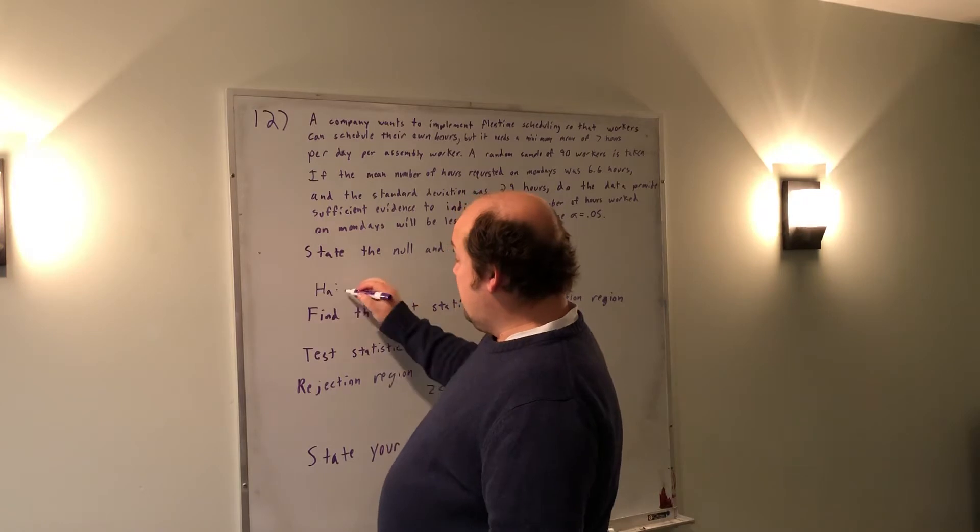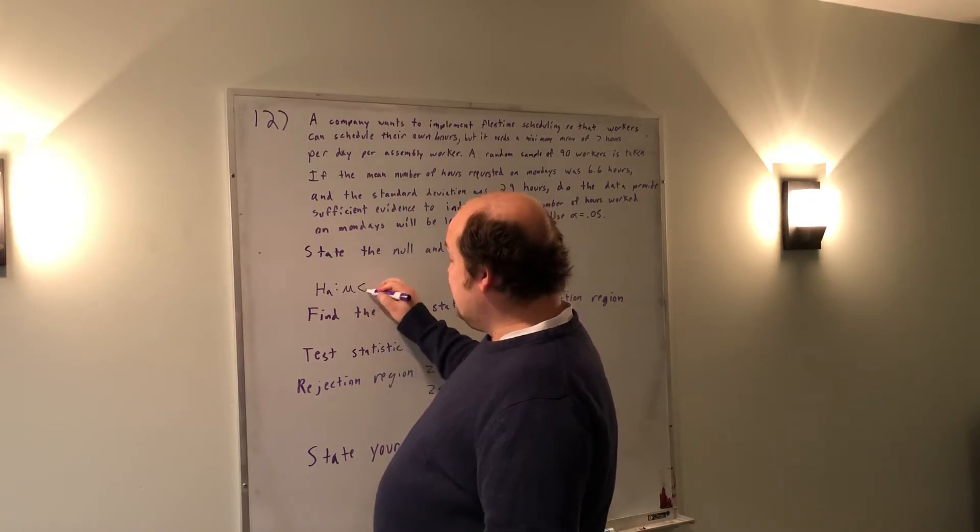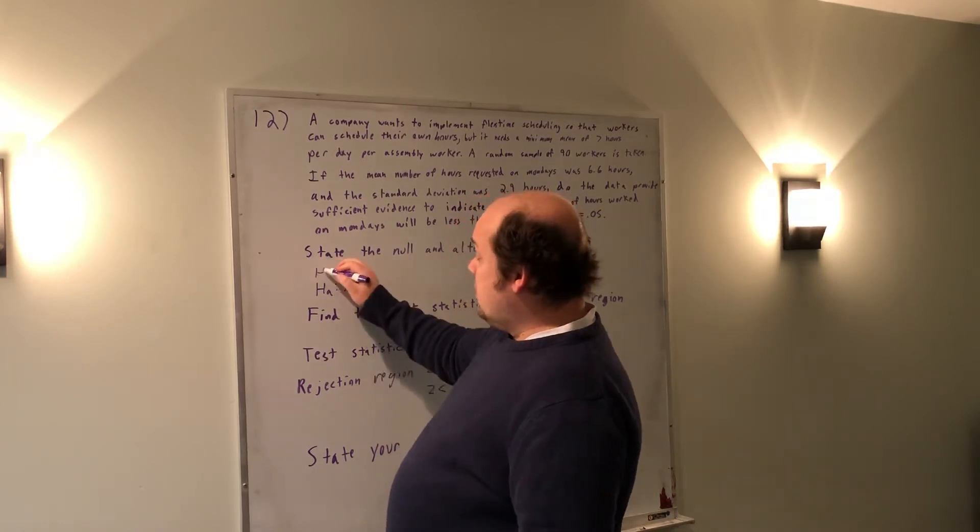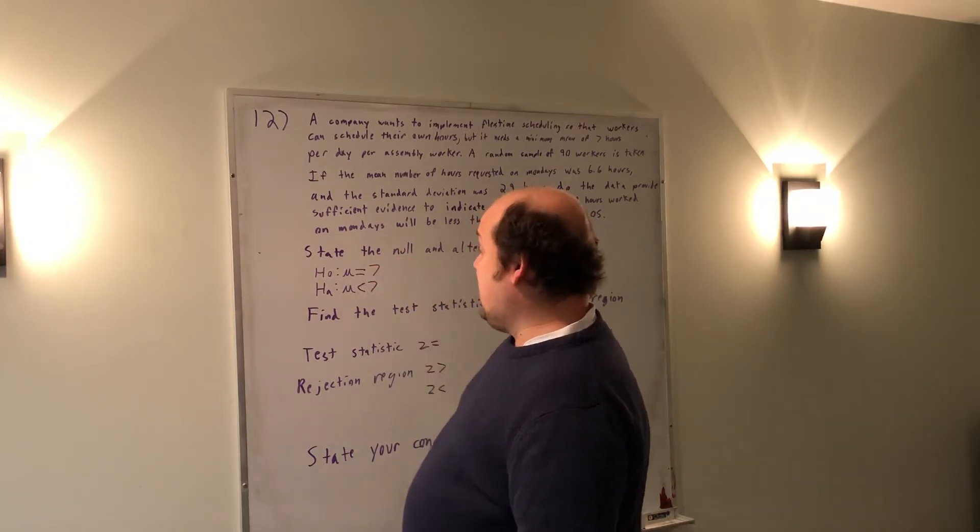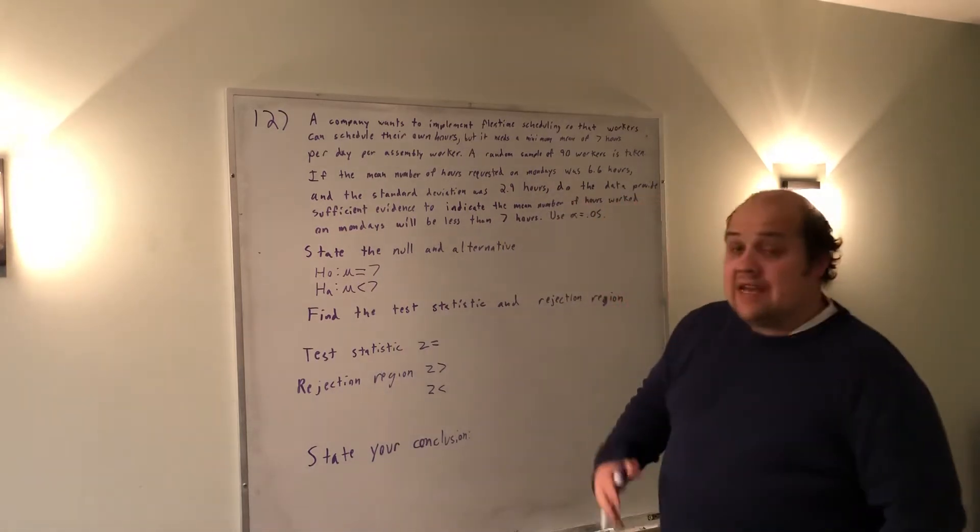What they're trying to prove goes in the alternative: that the mean number of hours is less than seven. The null is all the same symbols, mu seven, but it's always equal to.